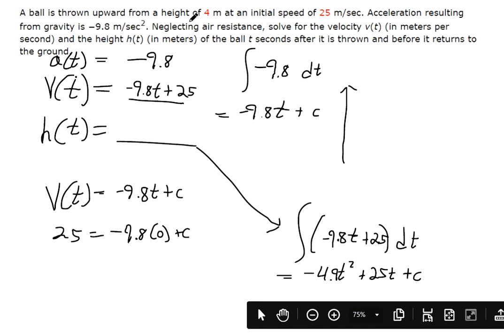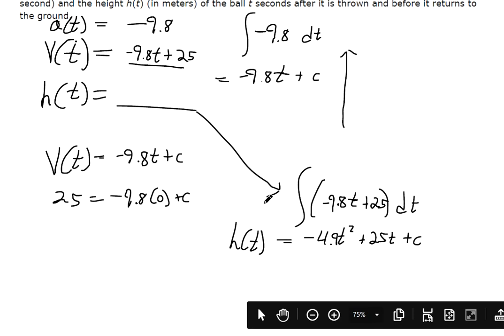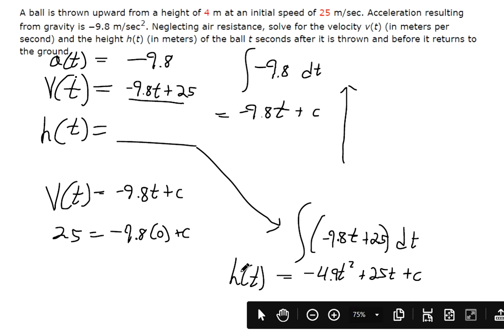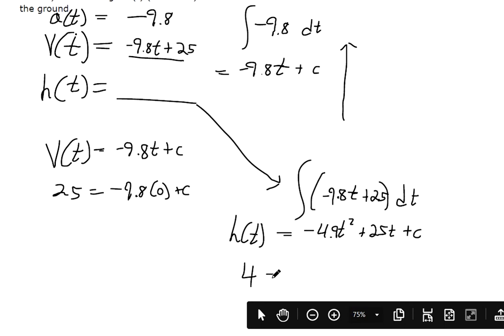And then we're given initial value information. This is the height, but the height is initially at 4 meters. So when we first start, when we plug in 0 for time, h is 4.